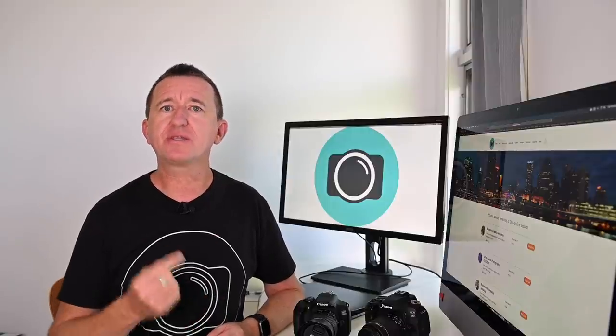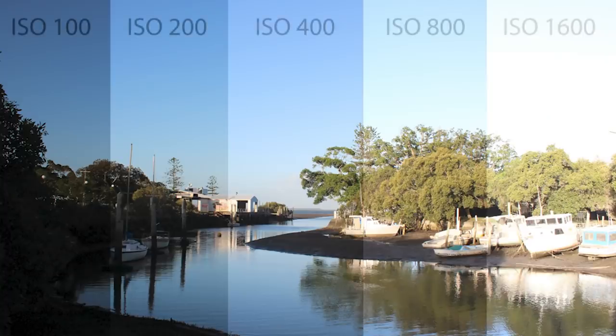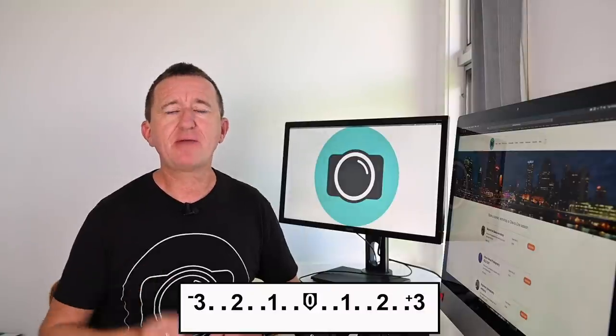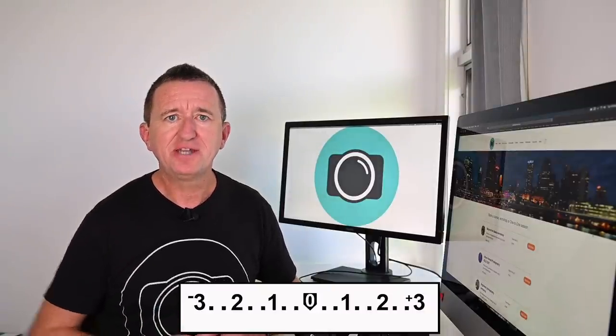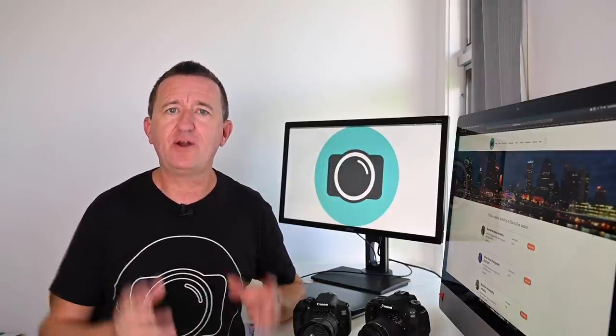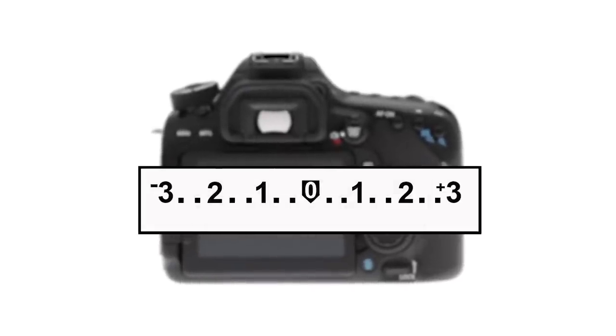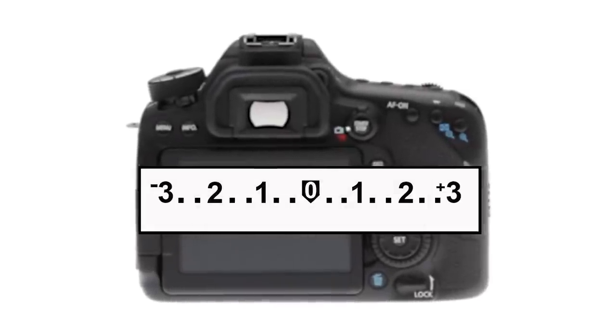A few moments ago, we looked at how we can adjust the camera's exposure just by adjusting the camera's ISO, and here are the images once again. Now, when you put your camera in manual mode, you're likely to see something like this on the LCD screen. This is the camera's exposure level indicator — I'm going to refer to this as the camera's light meter. The light meter allows us to measure how much light will be recorded by the camera if we fully press the shutter button.